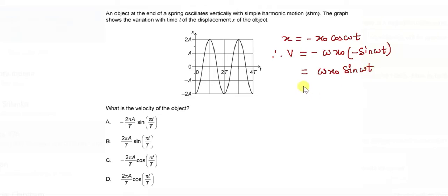Now I substitute the value of omega as 2 pi by T times x naught. X naught, my amplitude, is a. Sine of 2 pi by T times t. Just plug in all the formulas. And now therefore we get this is 2 pi by T, x naught which is amplitude a, times sine of 2 pi by T.